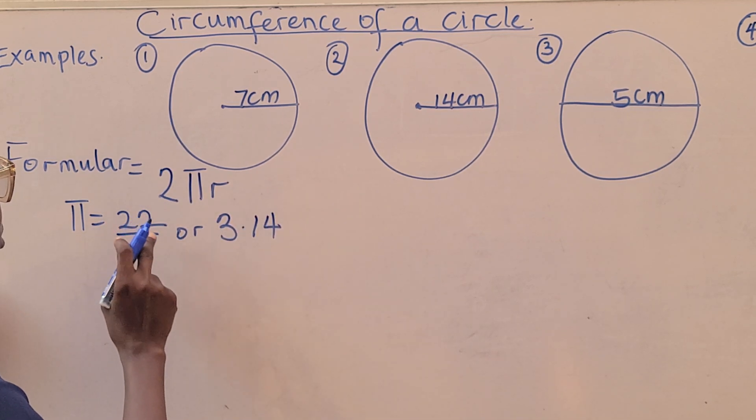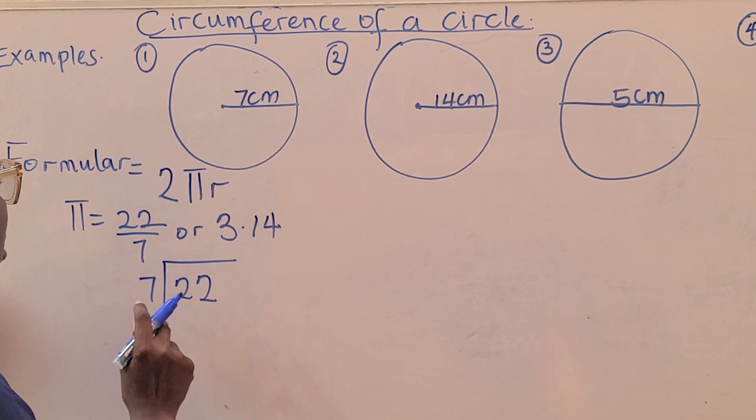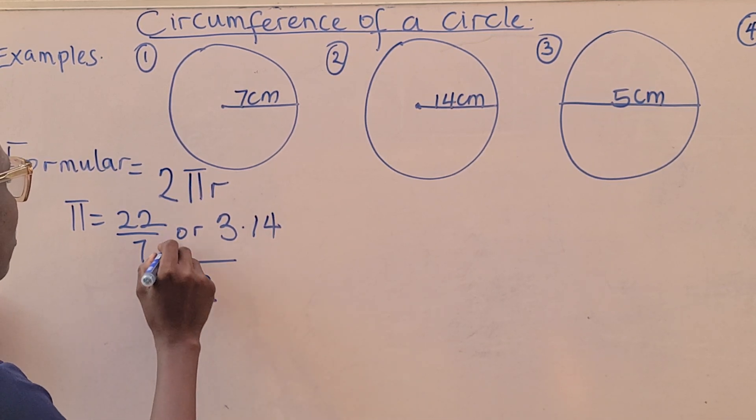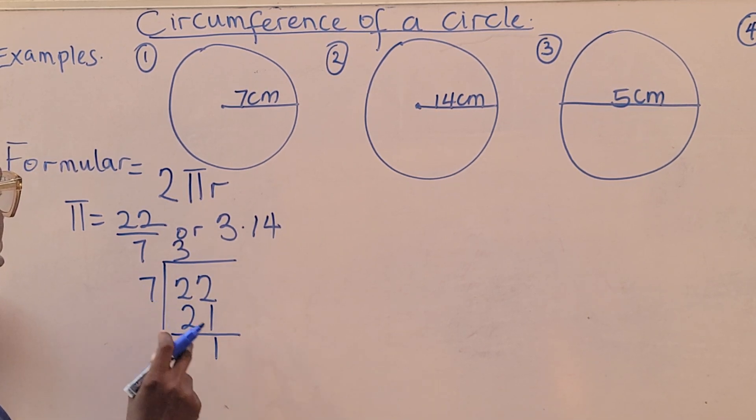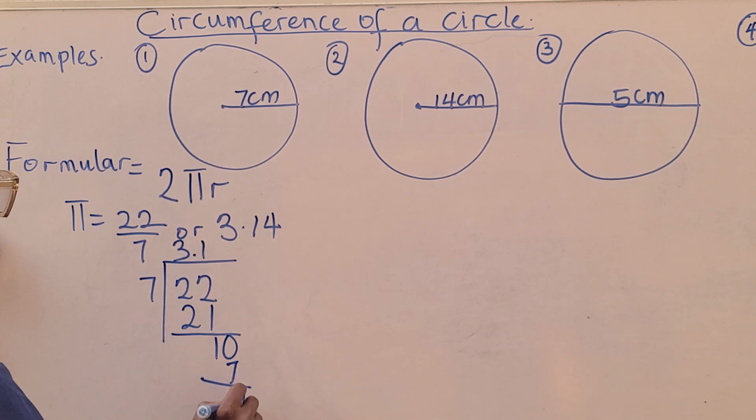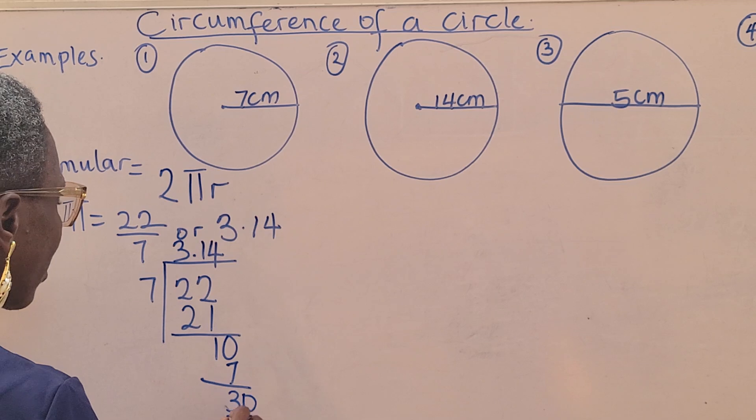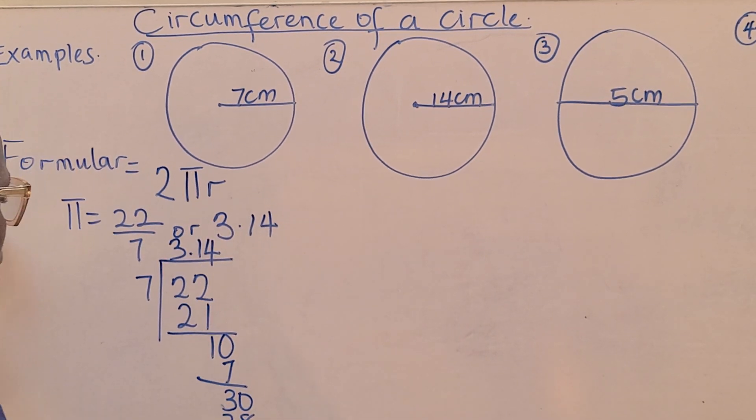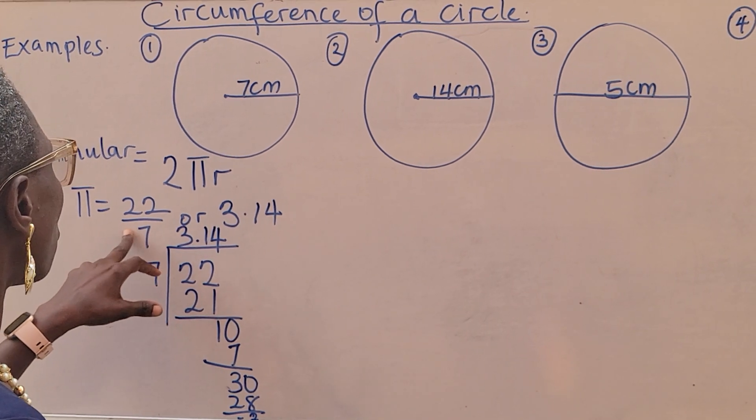If you divide 22 over 7, you will be getting 3.14. Let's do that. 22 divided by 7, that's 3. This is 21. You are left with 1. It's not possible. Add your 0. 10 divided by 7, that's 1. 7 times 1 is 7. You have 3. So add 0. 30 divided by 7, that's 4. And that's 28. So we have 2. So 3.14 is the same thing as 22 over 7.